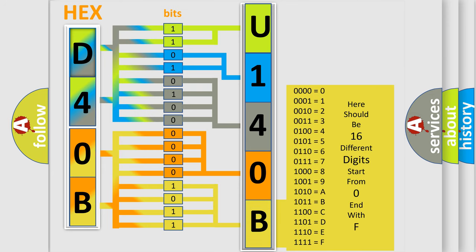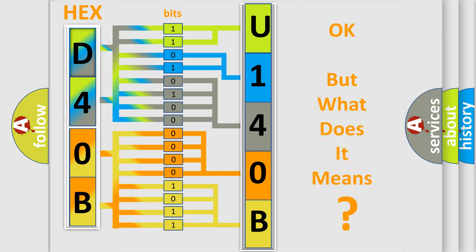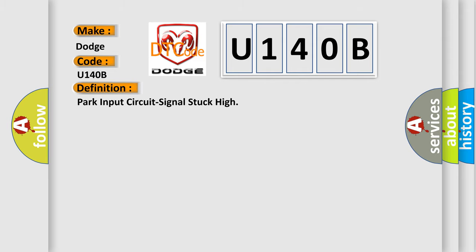We now know in what way the diagnostic tool translates the received information into a more comprehensible format. The number itself does not make sense to us if we cannot assign information about what it actually expresses. So, what does the diagnostic trouble code U140B interpret specifically for Dodge car manufacturers?